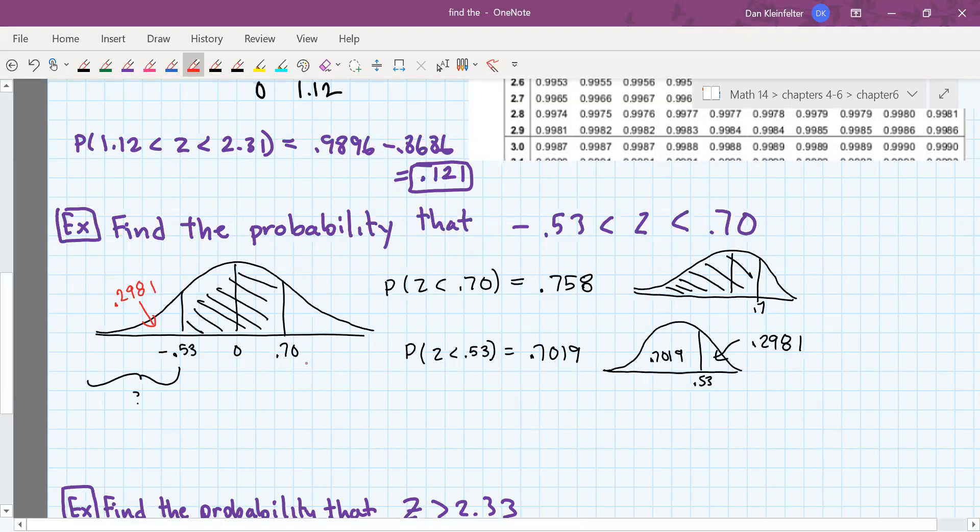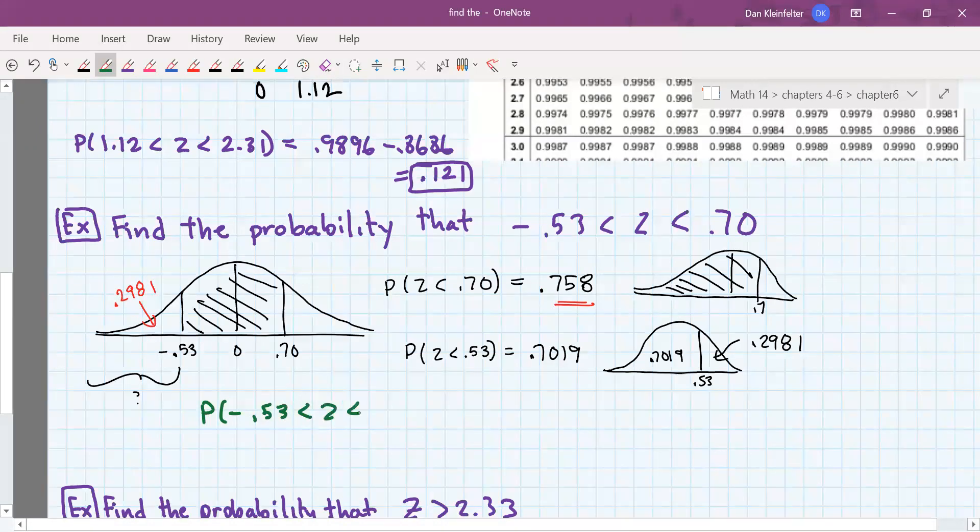So that means the area to the left of negative 0.53 is also 0.2981. If we know that the area to the left of 0.70 is 0.758 and the area to the left of negative 0.53 is 0.2981, then the probability that z will be between negative 0.53 and 0.70 will be the difference of those two areas.